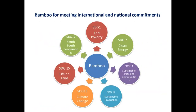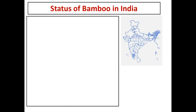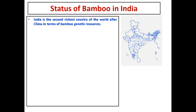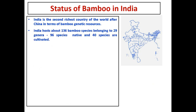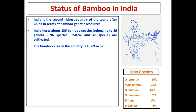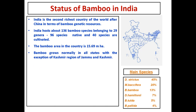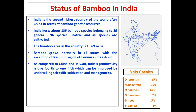Bamboo is a fast-growing plant distributed in many parts of the world, growing across 37 million hectares worldwide, with multiple uses for livelihood security. India is the second richest country in the world after China in terms of bamboo resources and hosts about 136 bamboo species belonging to 29 genera — 96 species are native and 40 species are cultivated. The bamboo area of the country is 15.69 million hectares and the major dominating species is Dendrocalamus species, which covers about 45% of the area, followed by Melocanna. Bamboo in India grows normally in all states with the exception of the Kashmir region. However, productivity of Indian bamboo is low compared to China and Vietnam, but it can be improved by undertaking scientific cultivation and management.